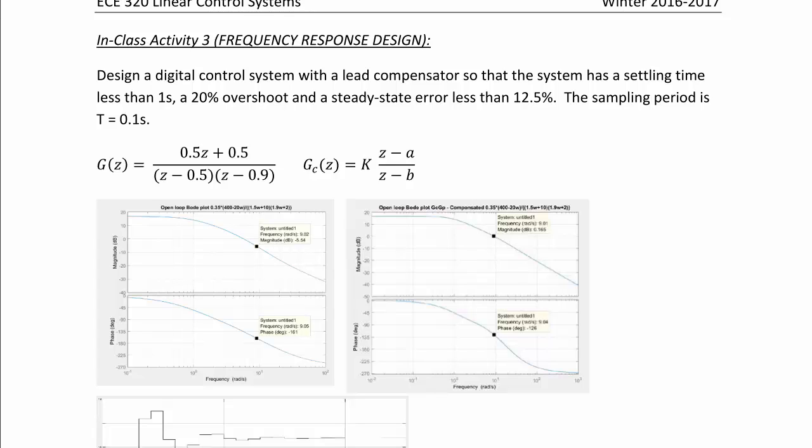In class activity 3, frequency response design. Design a digital control system with a lead compensator so that the system has a settling time less than 1 second, a 20% overshoot, and a steady state error less than 12.5%. The sampling period is T equal to 0.1 second.